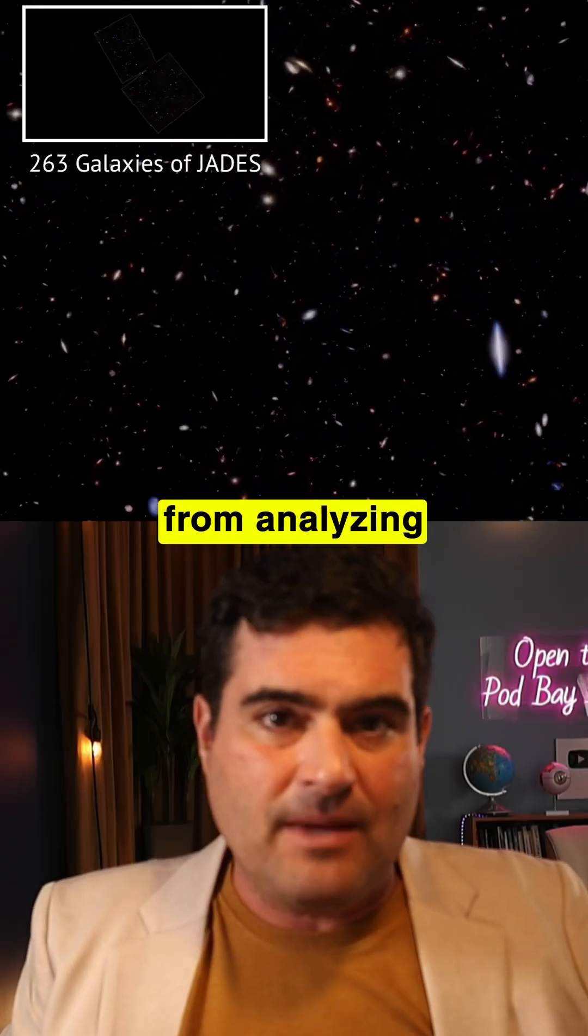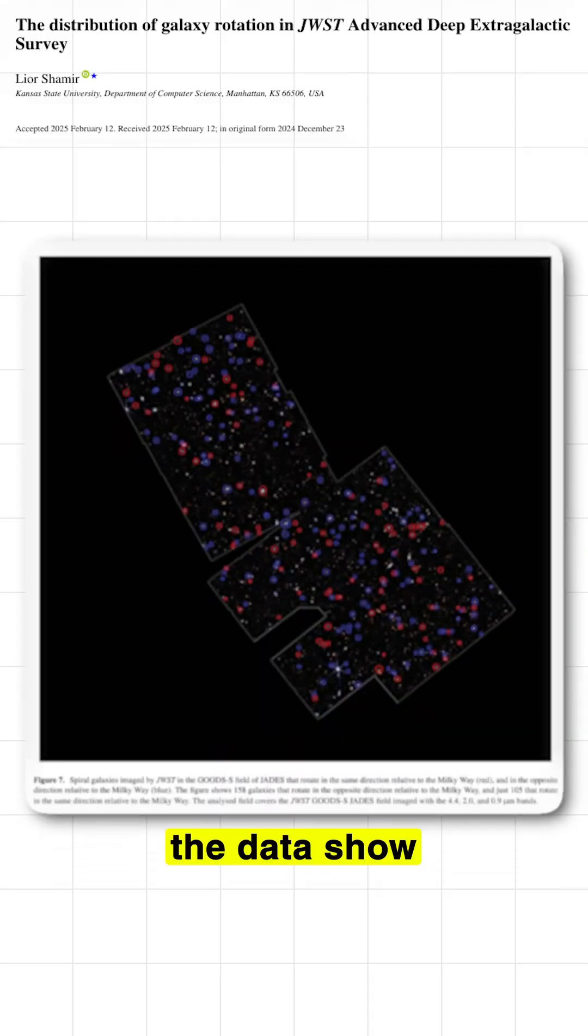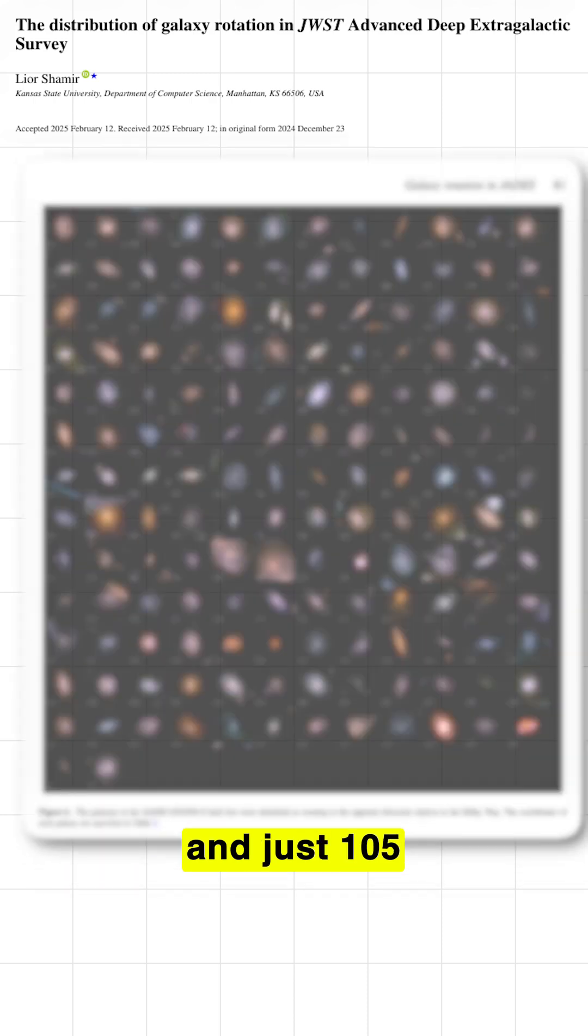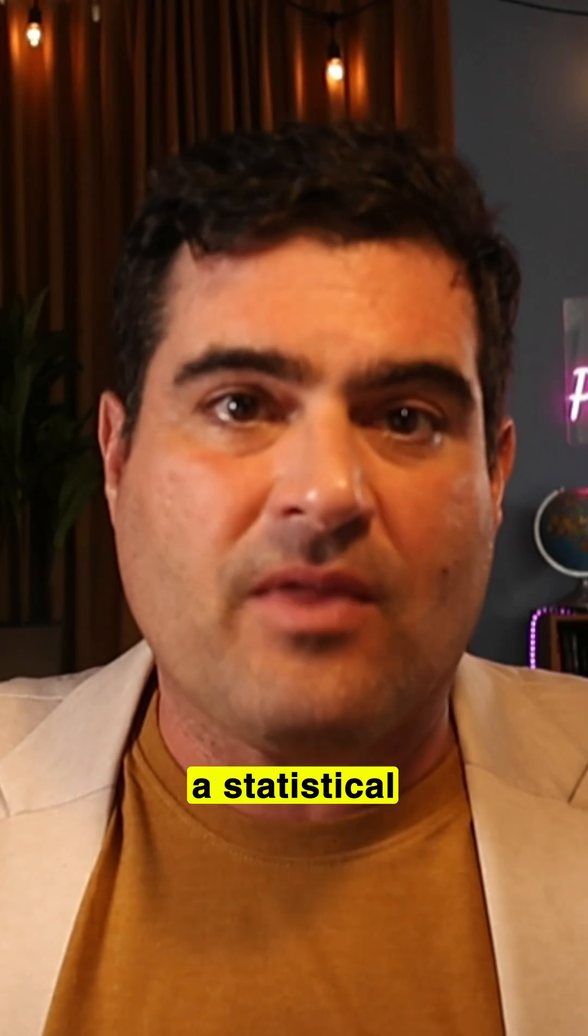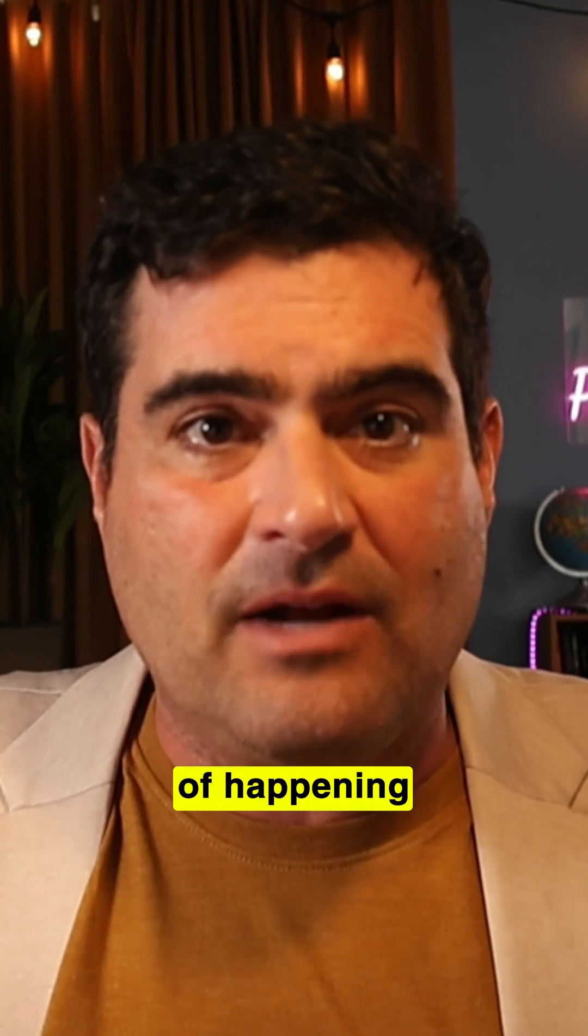This remarkable finding comes from analyzing 263 spiral galaxies in the JADES Field. The data show 158 galaxies rotating clockwise and just 105 rotating counterclockwise, a statistical anomaly with only a 0.07% chance of happening randomly.